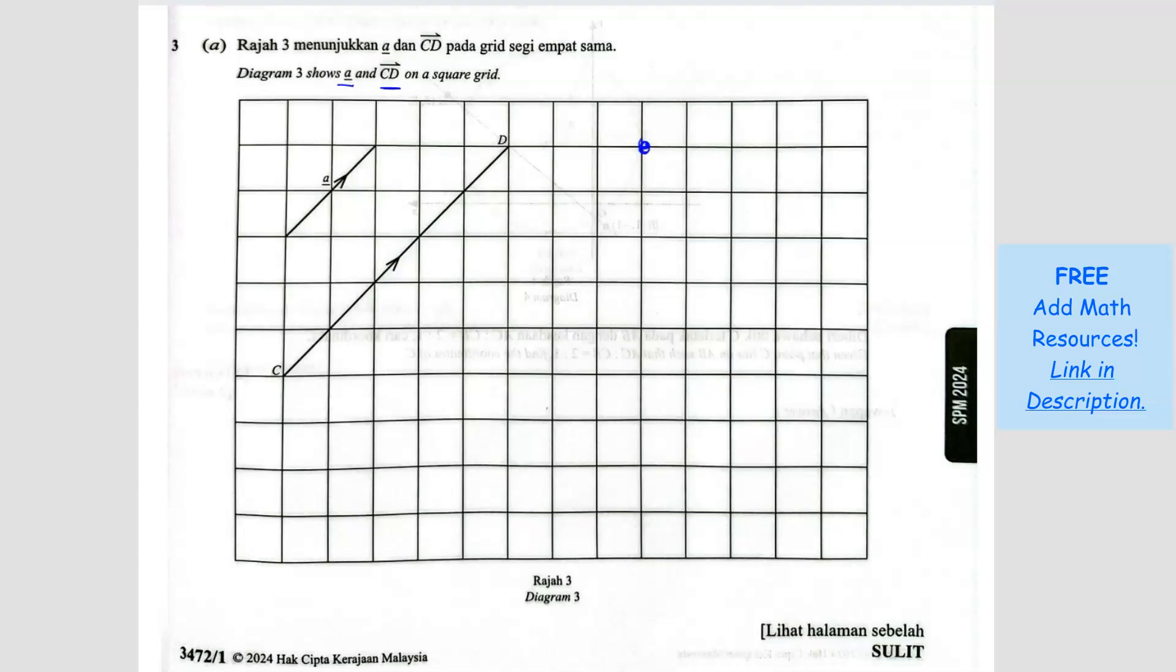So I'm going to move 4 times the length of A. So A is two boxes. So this is one time, two times, three times, and four times. So it's four times. So I'm going to end up here and it has to be opposite direction.